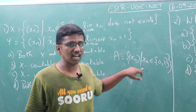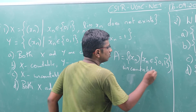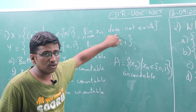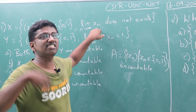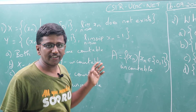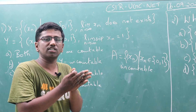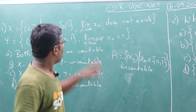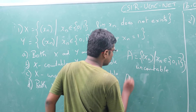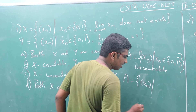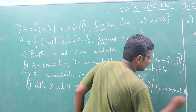By Cantor's diagonalization process, this set is uncountable — we will prove that. Now the complement of this set is: the limit exists, meaning entries are from 0s and 1s and the limit exists on the other side, which means the sequence is eventually constant. So the complement is the set of all xn such that xn is eventually constant.